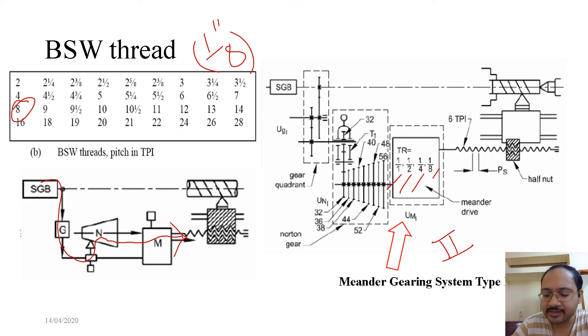That finally is fed to the lead screw, which has typically 6 TPI for the lead screw of a BSW lathe. So 6 TPI is 6 threads per inch.